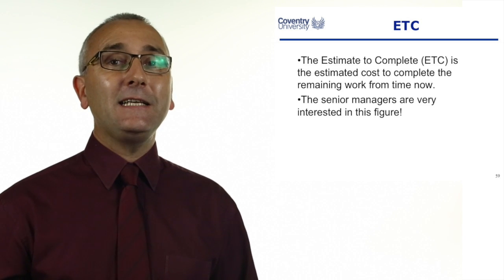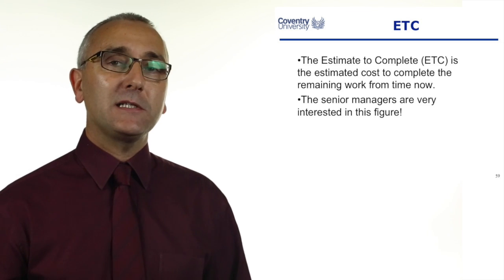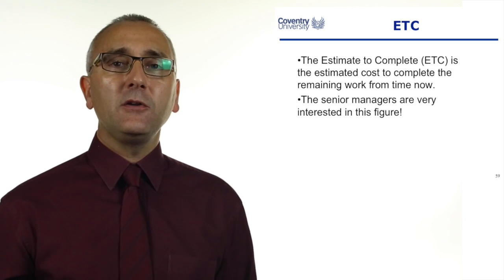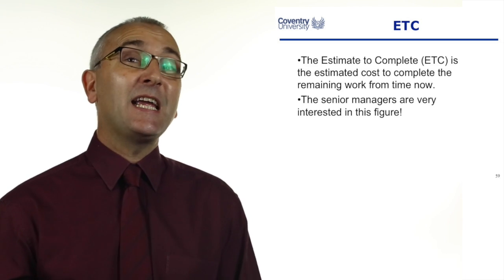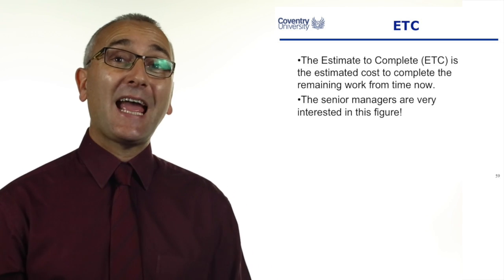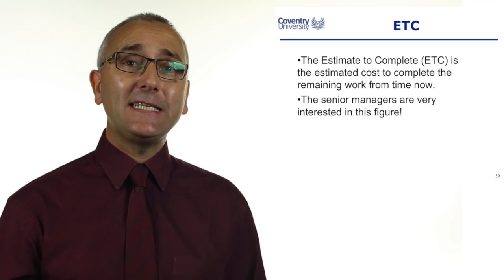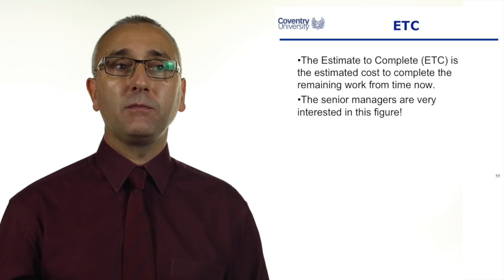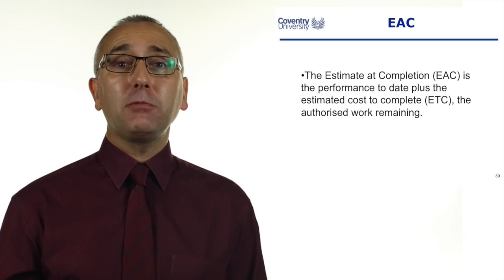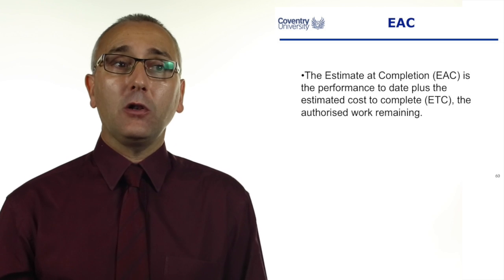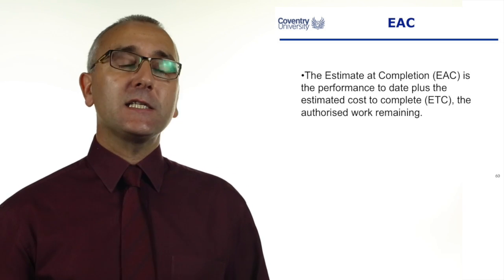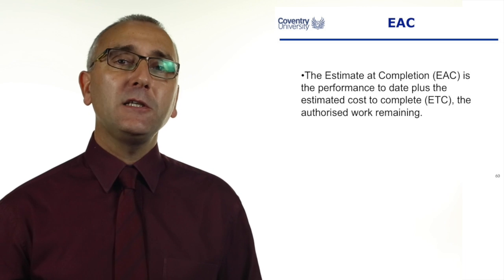The ETC is the estimate to complete. Senior managers will be very interested in this, because halfway through the project they'll ask how much money is needed to finish — especially if you're already over budget. Another one is the EAC, the estimate at completion: what is going to be the total amount? We can calculate this estimate to completion in different ways.